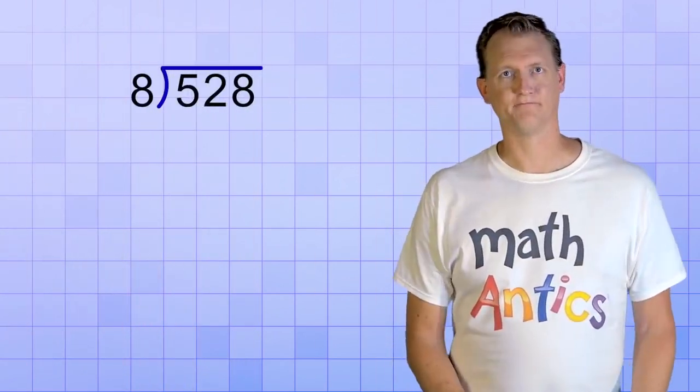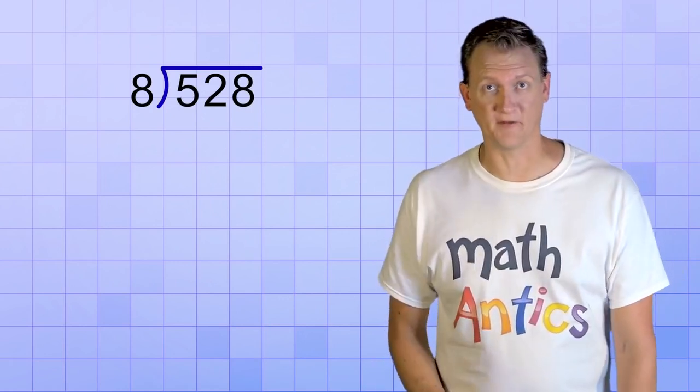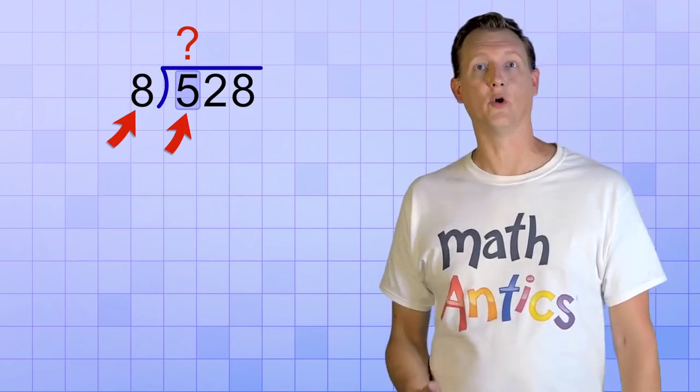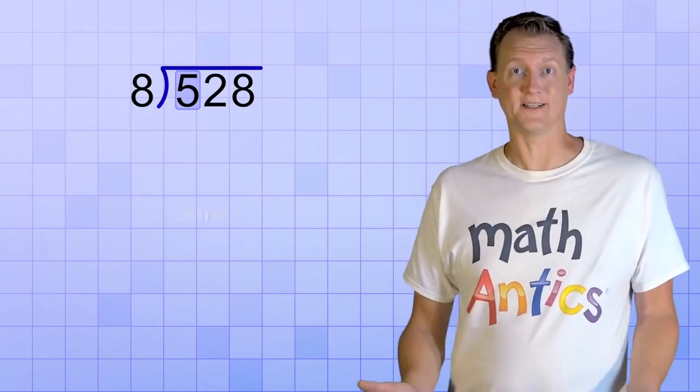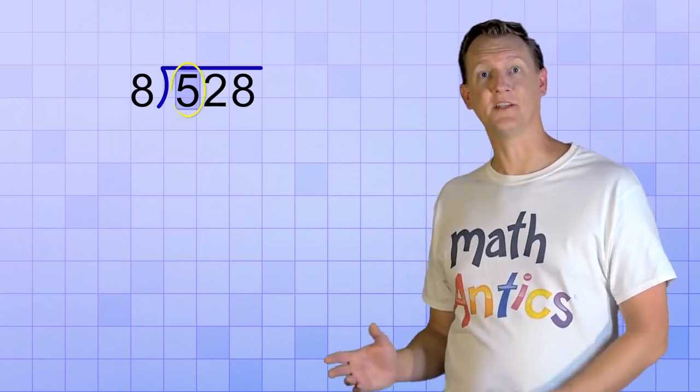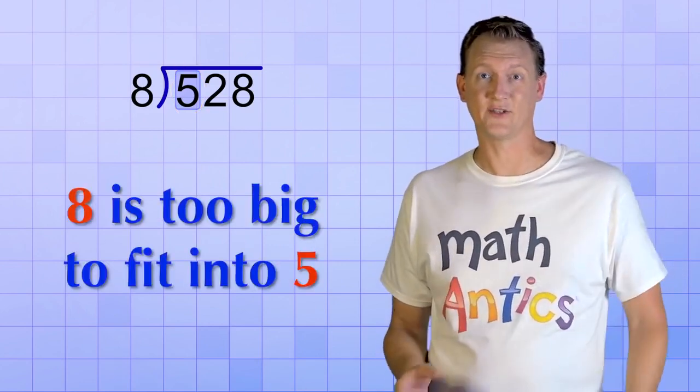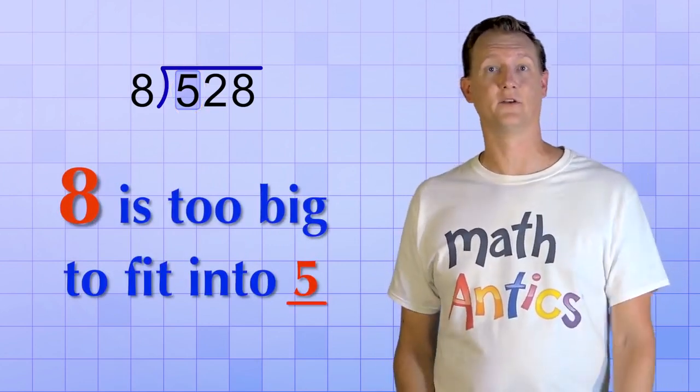Now let's solve the next example. And right at the start, you'll see we have a bit of a problem. When we ask, how many 8's does it take to make 5, or almost 5? The answer is none. And that's because the first digit, taken by itself, is less than the divisor. 8 is too big to divide into 5. So what do we do?